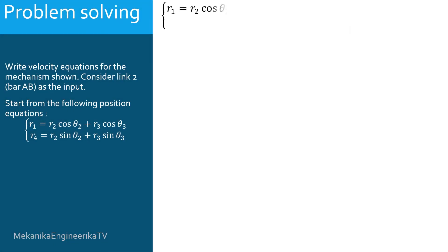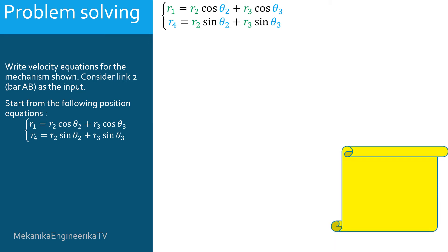Let's start now using the following two position equations. R1, R2, and R3 are constants. R4, theta 2, and theta 3 are changing with time. We need to differentiate each equation with respect to time. For this, we recall that the derivative of cosine of angle alpha with respect to time equals minus d alpha/dt times sine of alpha, and the derivative of sine of alpha with respect to time equals d alpha/dt times cosine of alpha.